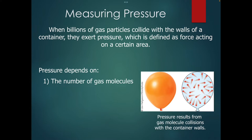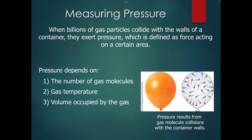Pressure depends on the number of gas particles. If we increase the number of gas molecules, we're going to increase the number of collisions and our pressure will increase. It's also related to temperature — as we increase the temperature, those gases will move faster and faster, which means more collisions and therefore increased pressure. It's also related to the volume occupied by the gas. If you put the same amount of gas particles into a smaller container, they're going to hit the walls more frequently because the container is smaller.